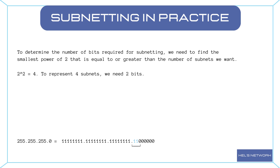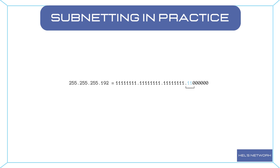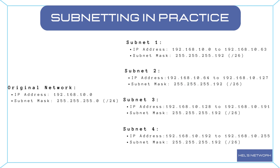Step 5: Create new subnet masks. By adding two bits to the original subnet mask, we get the new subnet mask for each of the four subnets: 255.255.255.192, represented as /26. This means we have 26 bits reserved for the network portion, leaving six bits for the host portion. Each subnet now has 64 IP addresses, providing enough space for hosts and efficient network management.